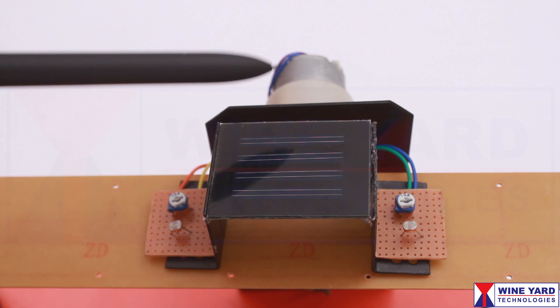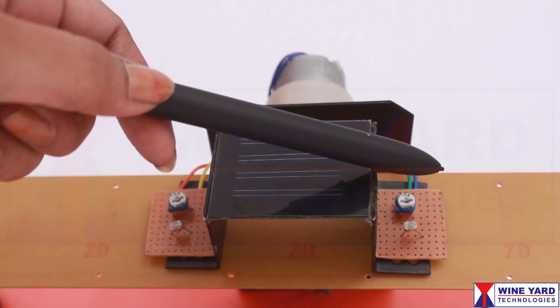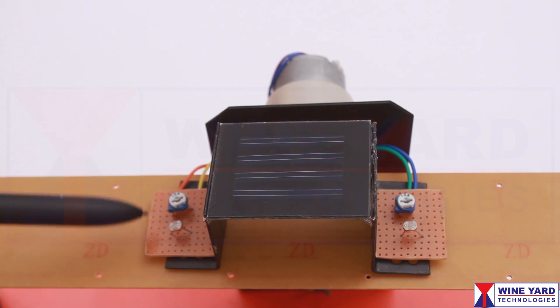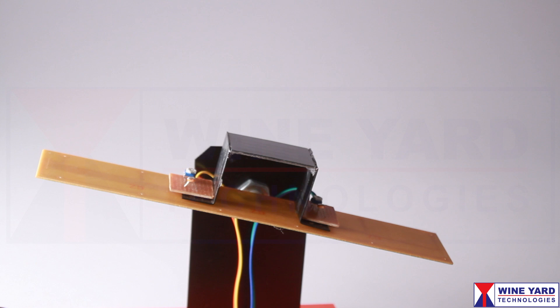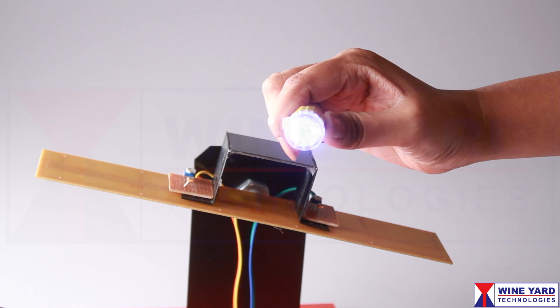You can see here this solar panel is mounted on this gear DC motor along with the sensor arrangement. These two are LDR sensors. Here I am using this torch light to replicate the sunlight for easy demonstration.